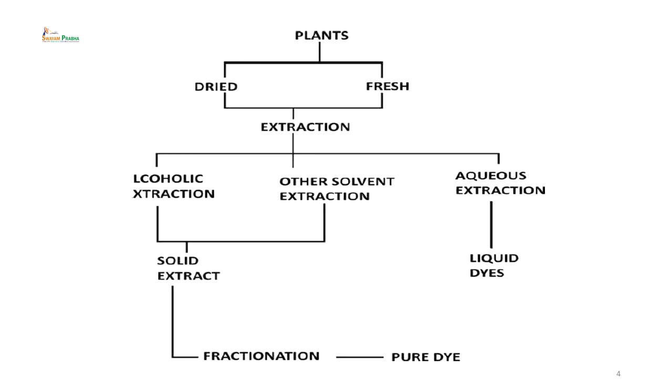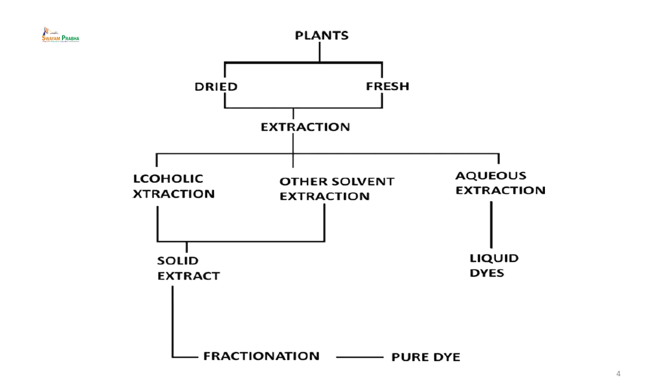That is a different set of reactions and strategies that we need to adopt. But right now, we are concentrating on an efficient method of extraction. Both dried plant parts and fresh plant parts can be used for extraction by three different methods: alcoholic extraction, any other solvent like acetone, ether, or even sometimes hexane, or we can use water — and that was one of the first methods used by primitive people for extraction. Solid extracts or liquid dyes can be obtained, and then one could do dyeing accordingly using these extracts.